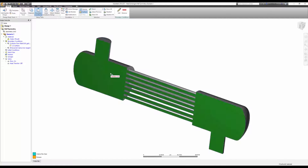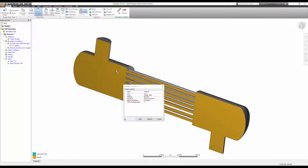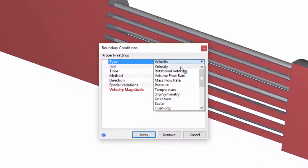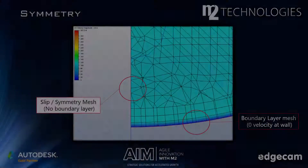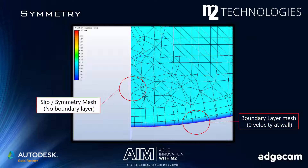Second, I need to apply the slip symmetry boundary condition to my symmetry plane. Unless I specify otherwise, CFD will treat every surface as a wall, assuming zero velocity there. We don't want that. In the full model, the fluid on that surface will be slipping against fluid, not shearing against a wall. The slip symmetry boundary condition is how we tell CFD that this isn't a wall, and that we don't want friction there.